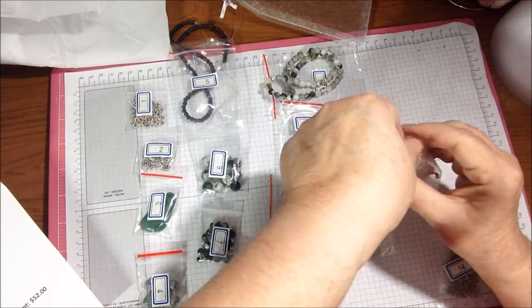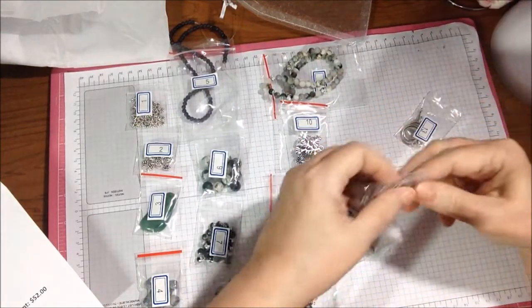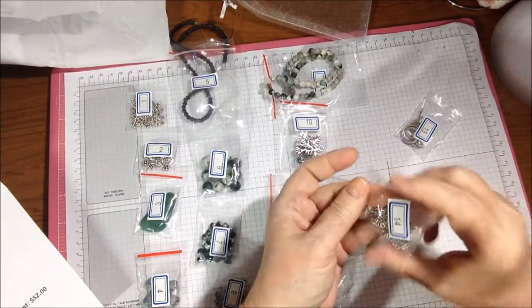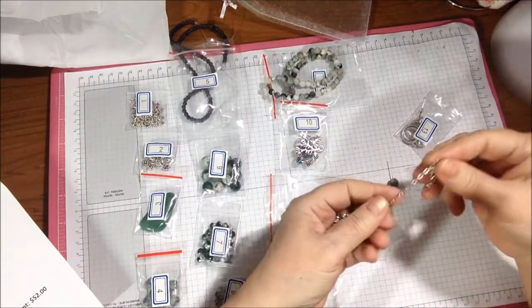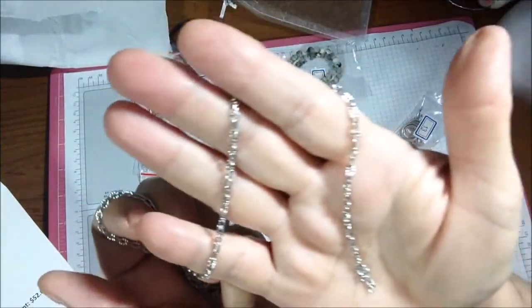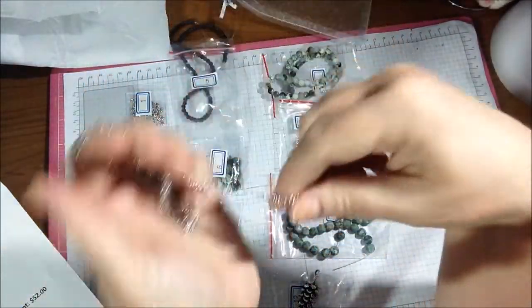And last but not least is chain. This is one meter, which is about a yard, four by three millimeter steel textured jewelry chain. I don't know if you can see that or not. So that is my Bargain Bead Box for December.